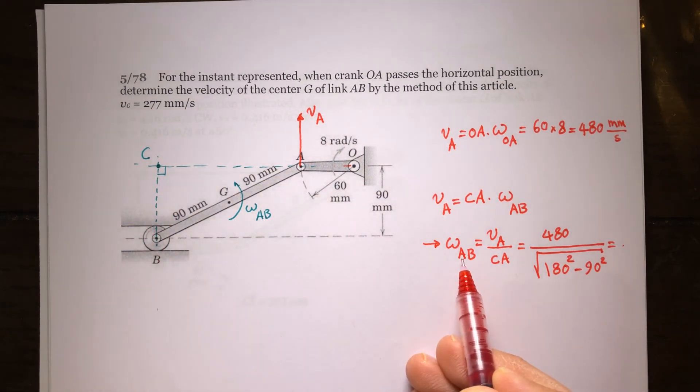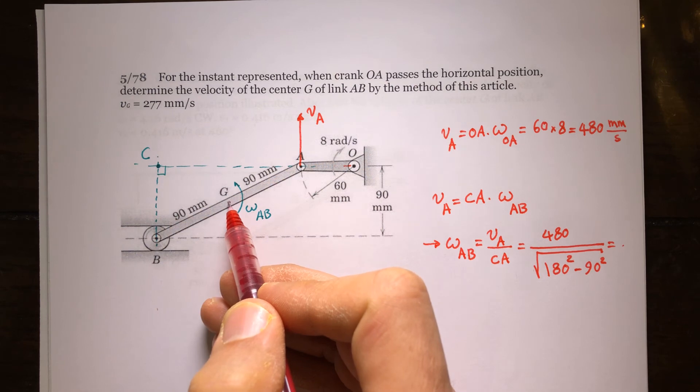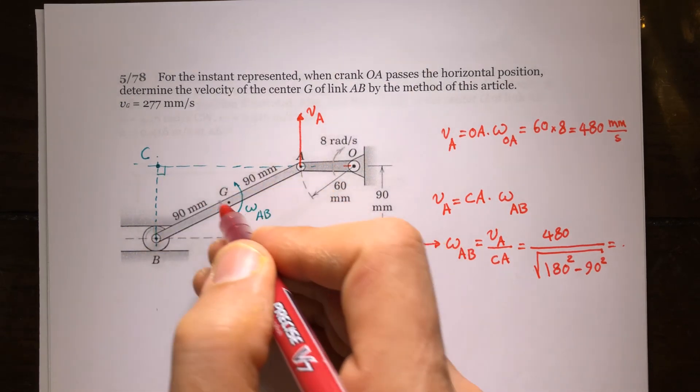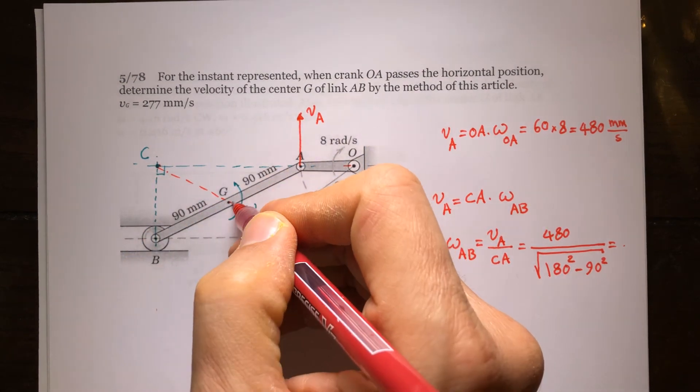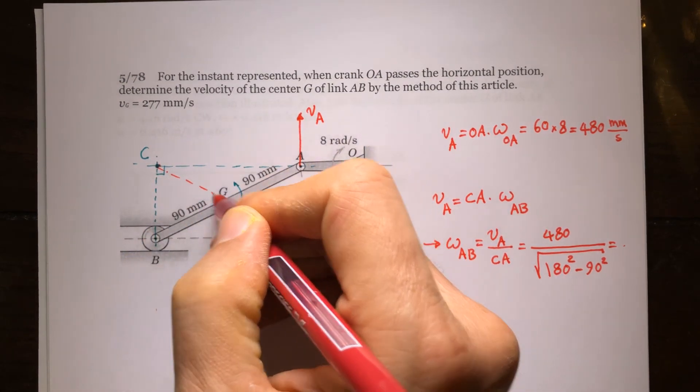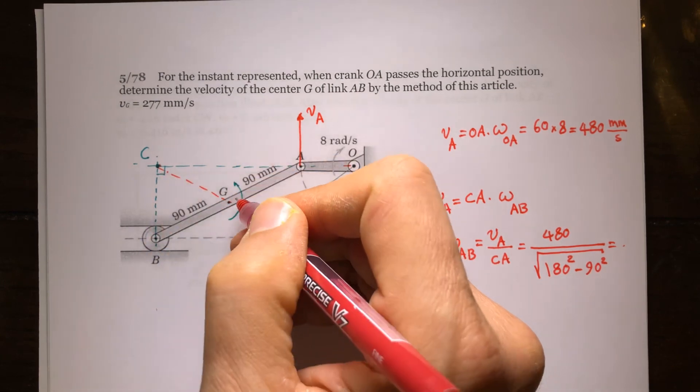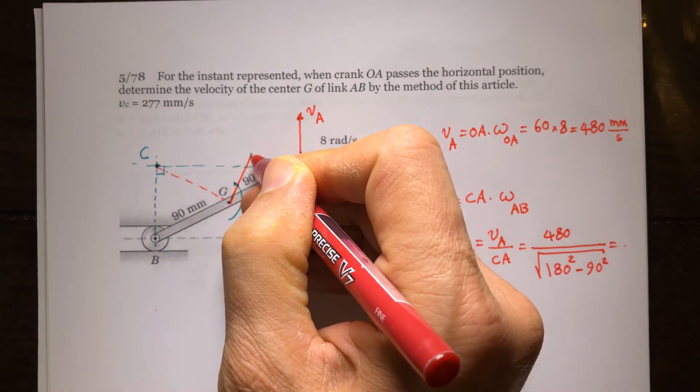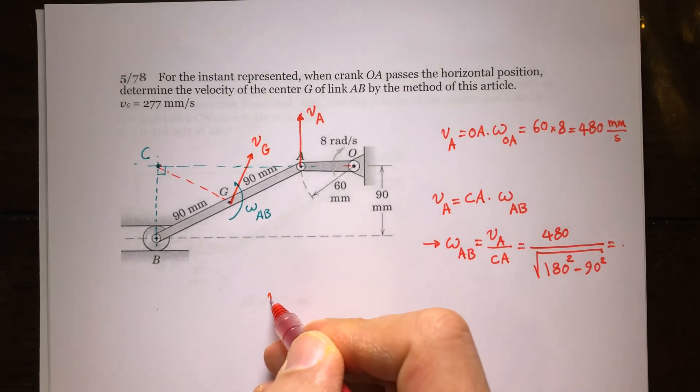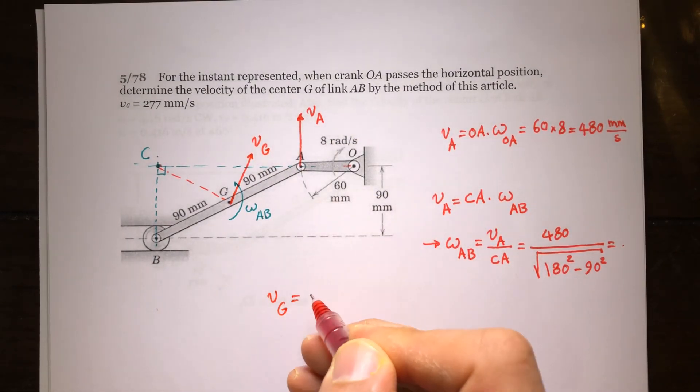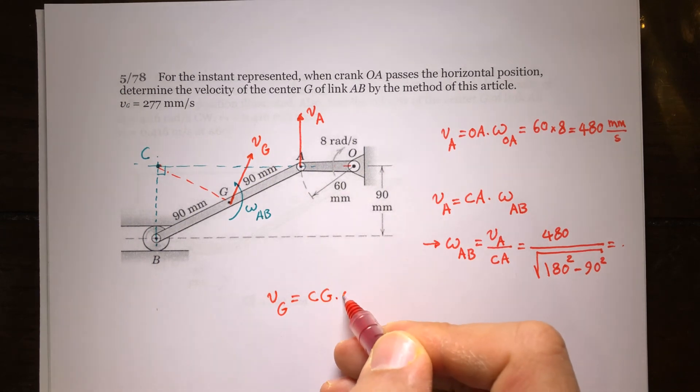If I want to find the velocity of G, the velocity of G is going to be this length times omega, and the direction of the velocity will be perpendicular to CG. So velocity of G is equal to CG times omega AB.